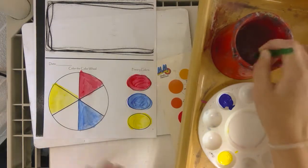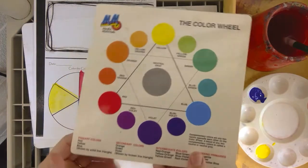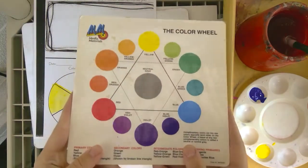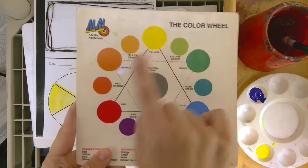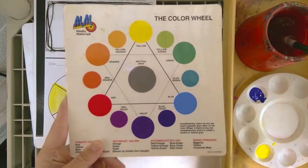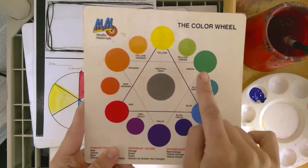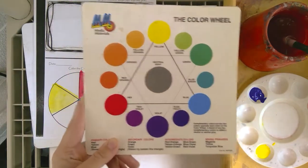Now who knows what the secondary colors are? Can anybody take a look at the color wheel and guess what the secondary colors are? Yellow, red, and blue are the primary colors. So what are the secondary colors? That's right, orange, green, and violet are the secondary colors.